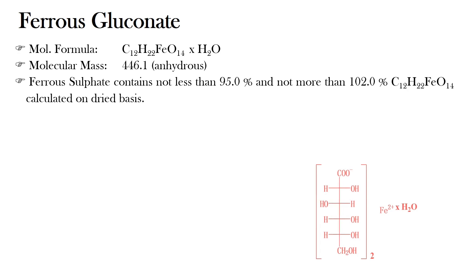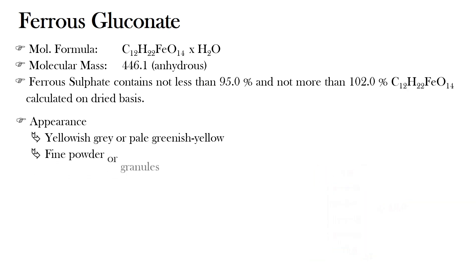Regarding physical appearance, Ferrous Gluconate occurs as yellowish gray or pale greenish-yellow fine powder or granules. It has a slight odor resembling that of burnt sugar.